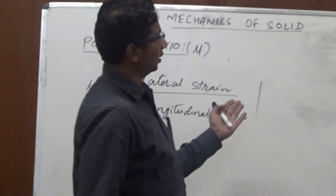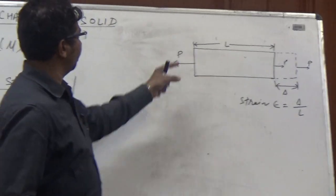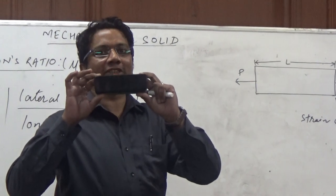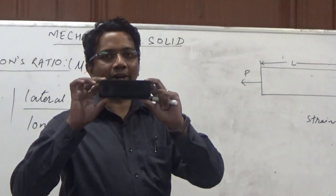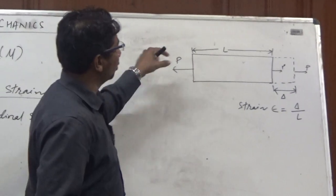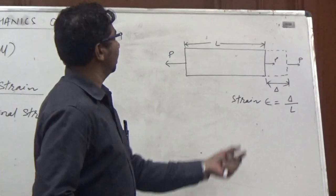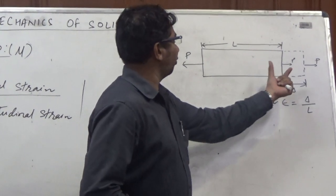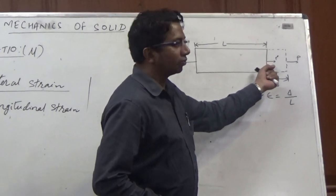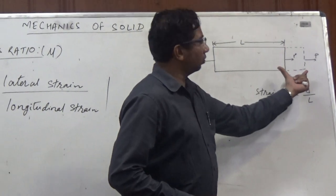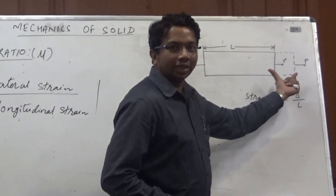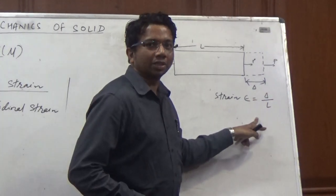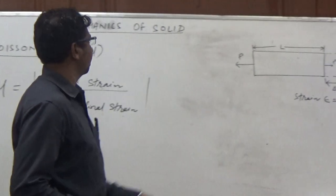First we will discuss about strain. If we take a small bar — a small piece of metal or any kind of material — and we apply a force on both sides, then the original length of the bar is L, and after the effect of this force, the length increases by delta. This ratio of the change in length upon the original length is the definition of strain.